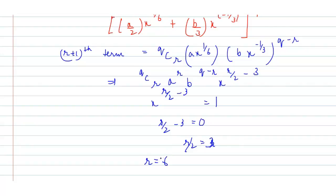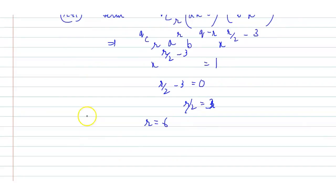Now, if r equals 6, then what is the independent term? So independent term would be equal to 9C6, a raised to the power 6, b cubed.